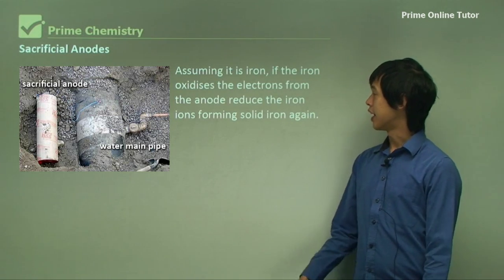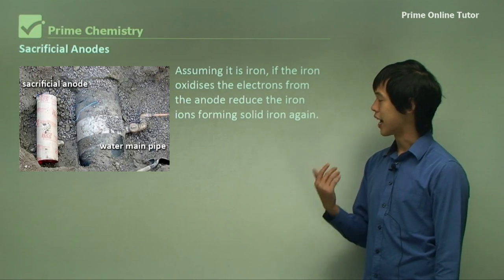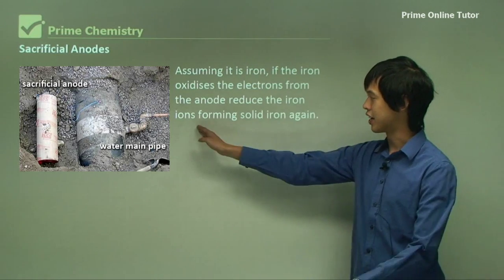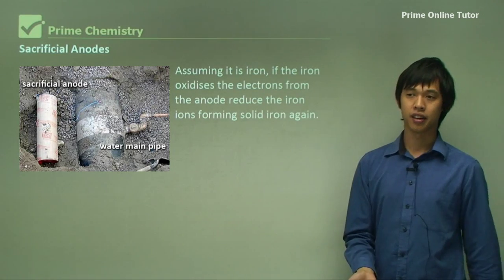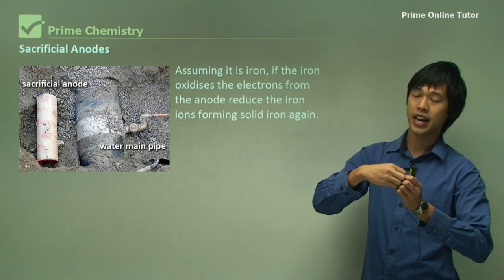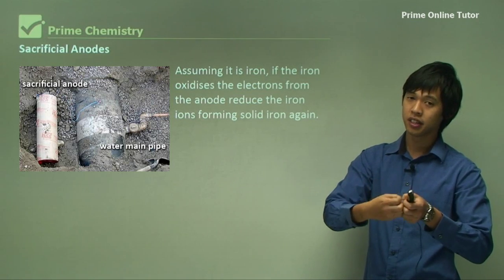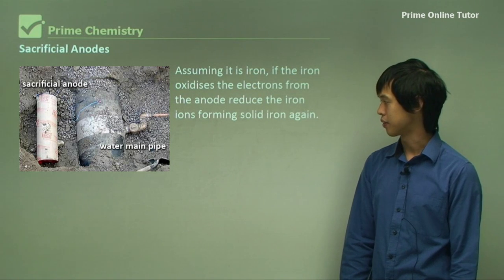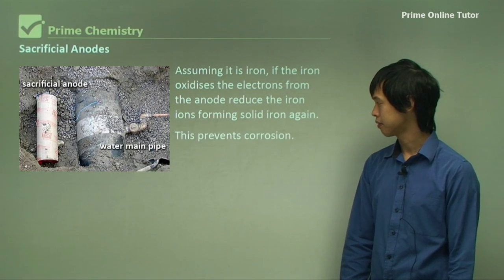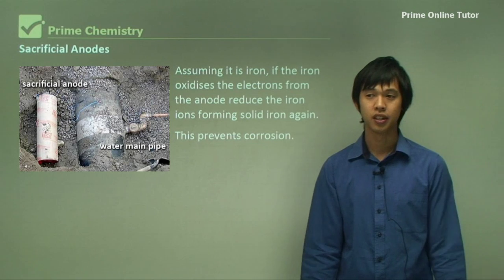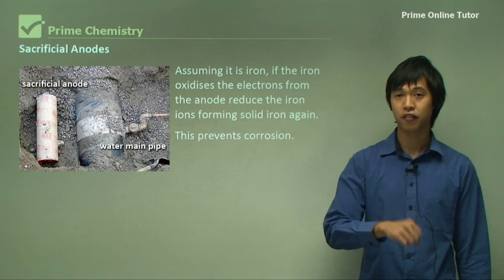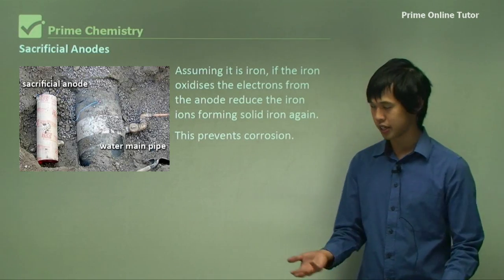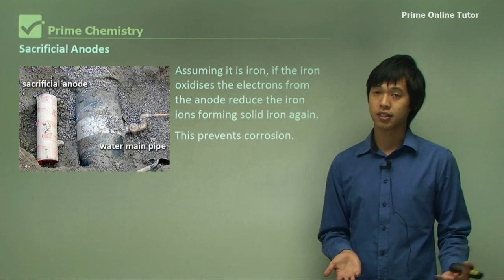Assuming it is iron: if the iron oxidizes, the electrons from the anode reduce the Fe ions back into solid iron again. The Fe atom becomes an Fe ion, but is instantly turned back into an Fe atom. We don't have to worry about the steel. This prevents corrosion because if we can't get any Fe ions, we can't bond them to other things, which would cause rust or corrosion — and so we just have plain steel again.